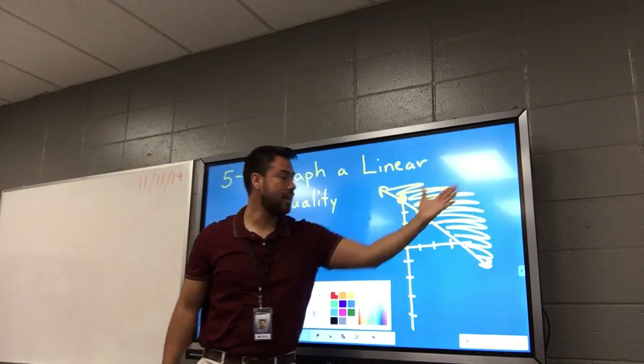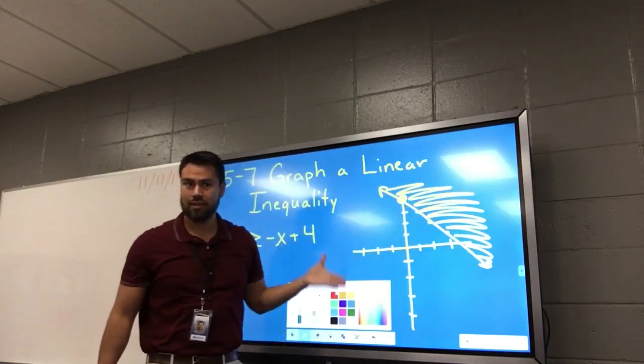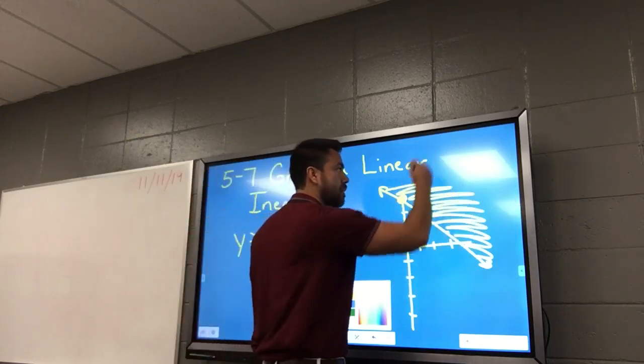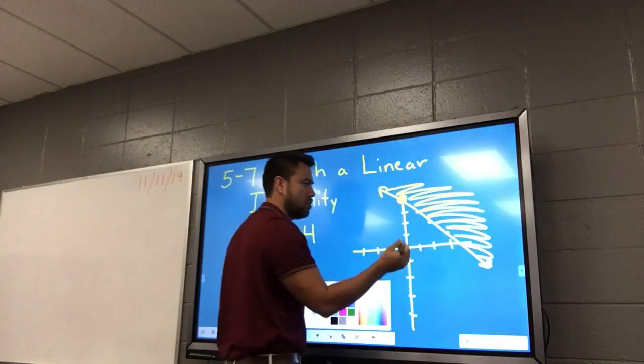We call this half that I just shaded, we call it a half plane. The whole thing is a big plane. It extends out infinitely in all directions. But we just cut it in half. This is a half plane. Guess what this is called? Half plane.